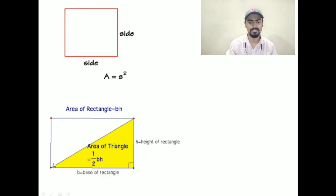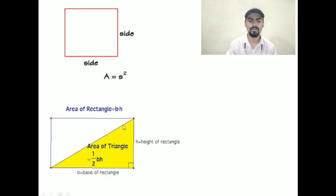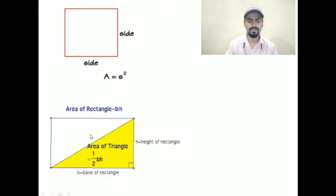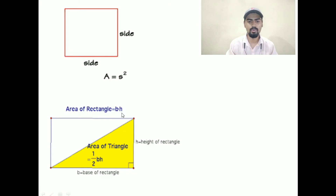Don't get confused — in this figure we have considered this as the base and this as the height. So what will be the area of the rectangle? Base into height. If you say this is length and this is breadth, then the area of a rectangle is length into breadth. Now, look at this diagonal. Using this diagonal, we are going to cut the rectangle into two equal parts — one part shaded with yellow color, and that is the triangle. So we have divided this rectangle into half, giving us half into base into height as the area of the triangle.